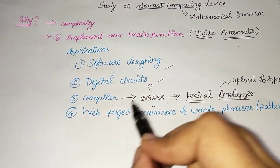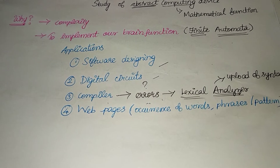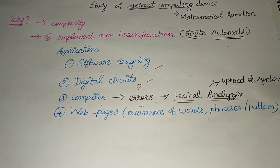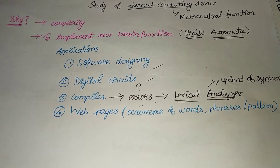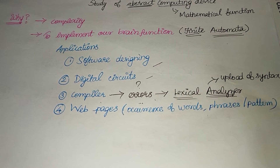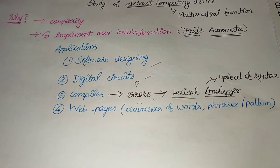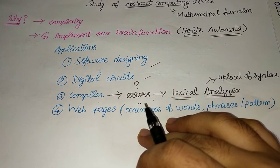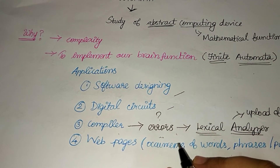Next, we use webpages. We search for a particular word — it is a repeated pattern. If we check the machine, we will use this automata to find that pattern.